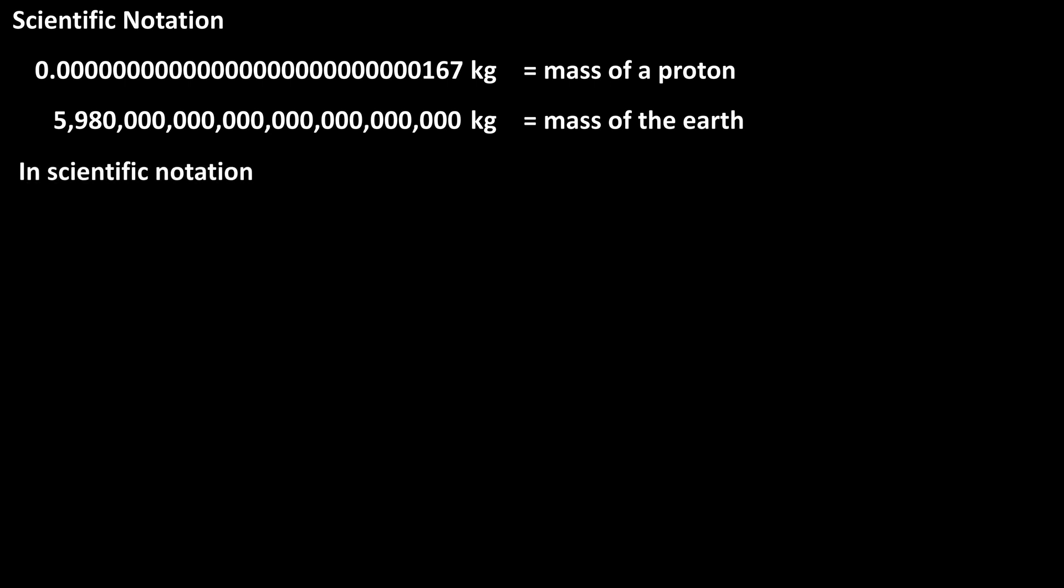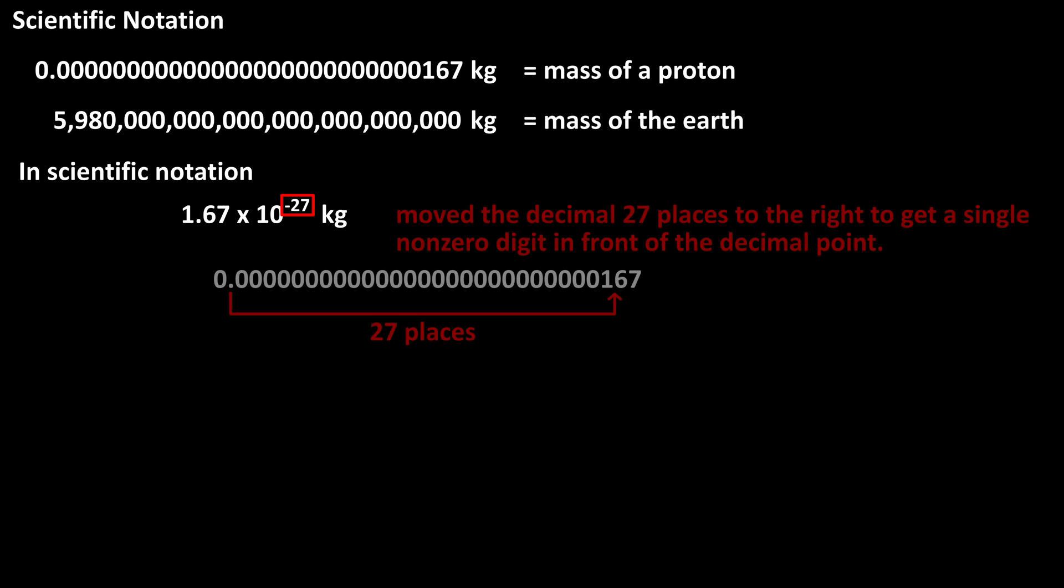In scientific notation, the mass of a proton is written as 1.67 times 10 to the negative 27 kilograms, and the key number is the exponent of negative 27. What this basically means is that we had to move the decimal point 27 places to the right to get a single non-zero digit in the ones column, or in front of the decimal point.